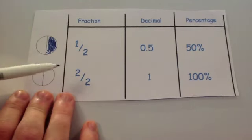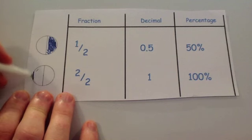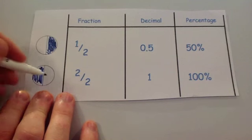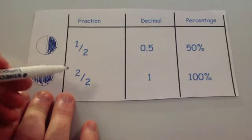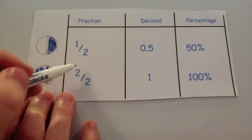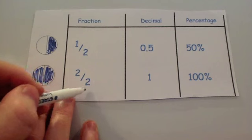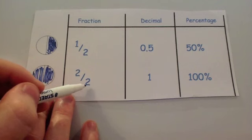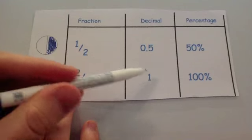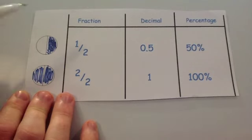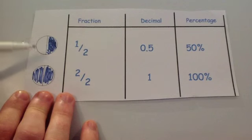If you were asked to shade in two halves, you'd be shading in the whole thing. Whenever the numerator — the top of the fraction — is the same as the denominator — the bottom of the fraction — it equals the whole, or one, or 100%. So a half is 50% or 0.5, and two halves is the whole thing: one or 100%.